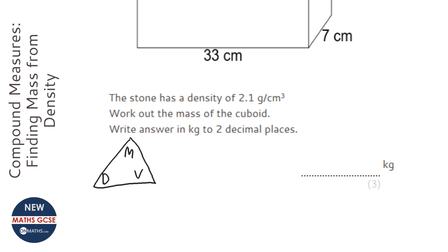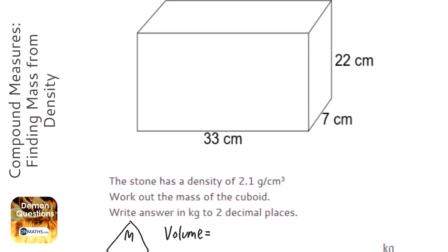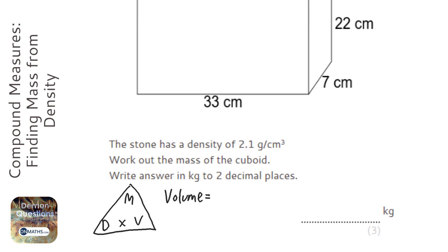So to work out mass, I'm going to do density times the volume. First of all, we have to work out the volume. For a cuboid, it's just multiplying all the dimensions together, so 33 times 22 times 7.